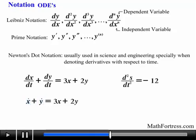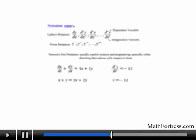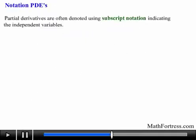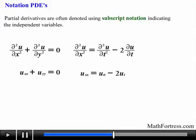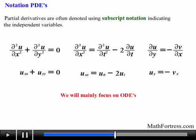This differential equation can be rewritten as s double dot equals negative 12. Partial derivatives are often denoted using subscript notation indicating the independent variable. For example, the following partial derivatives can be rewritten using subscript notation. Partial differential equations are usually taught in a second course of differential equations, and for the most part, we will only focus on ordinary differential equations.